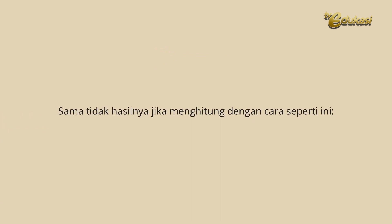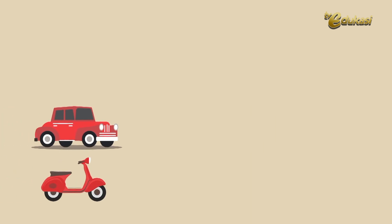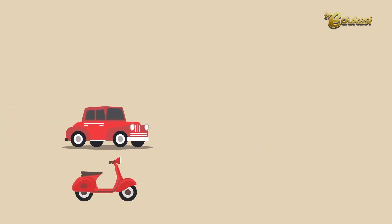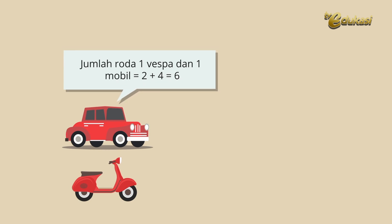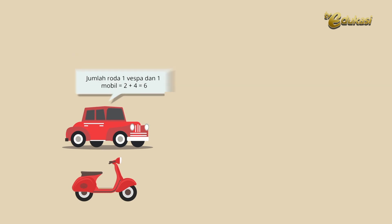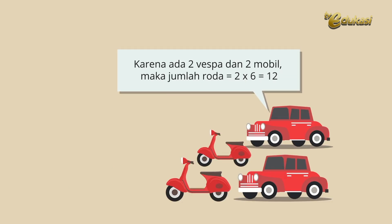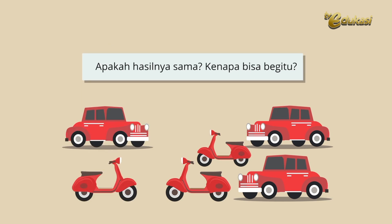Sama tidak hasilnya jika menghitung dengan cara seperti ini? Jumlah roda 1 Vespa dan 1 mobil sama dengan 2 ditambah 4 sama dengan 6. Karena ada 2 Vespa dan 2 mobil, maka jumlah roda sama dengan 2 dikali 6 sama dengan 12. Apakah hasilnya sama? Kenapa bisa begitu?